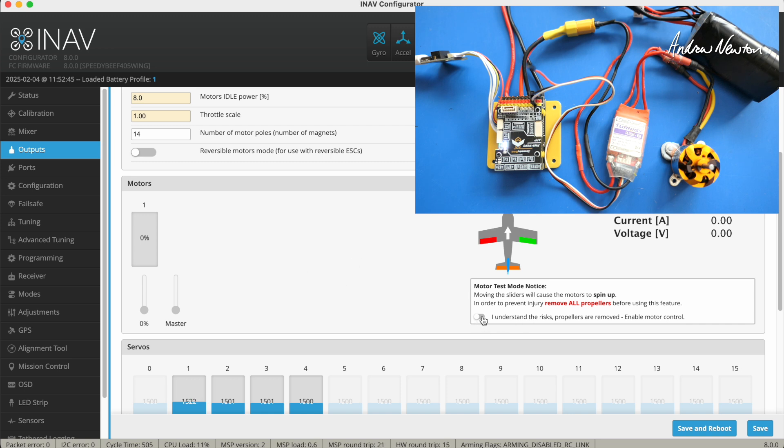You can see in this motor tab here, you can tick this little warning box: remove your propellers, because this will be spinning up the motor on the bench. Tick that and then we have access to a motor slider here. My motor is working nicely. So yeah, that's just a way of checking whether the board is communicating with the ESC.